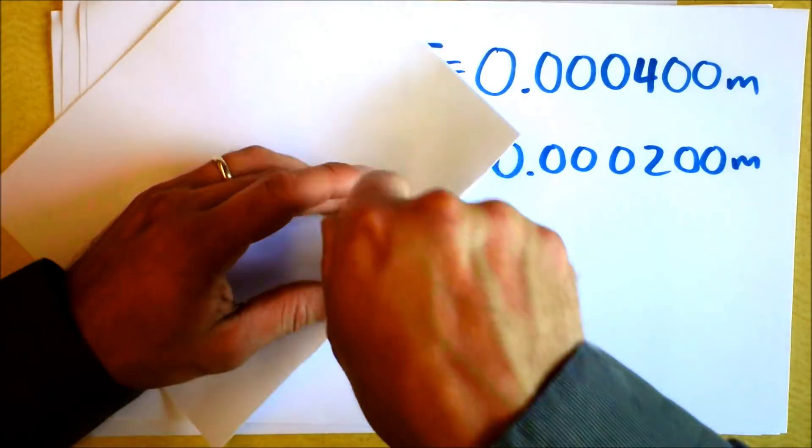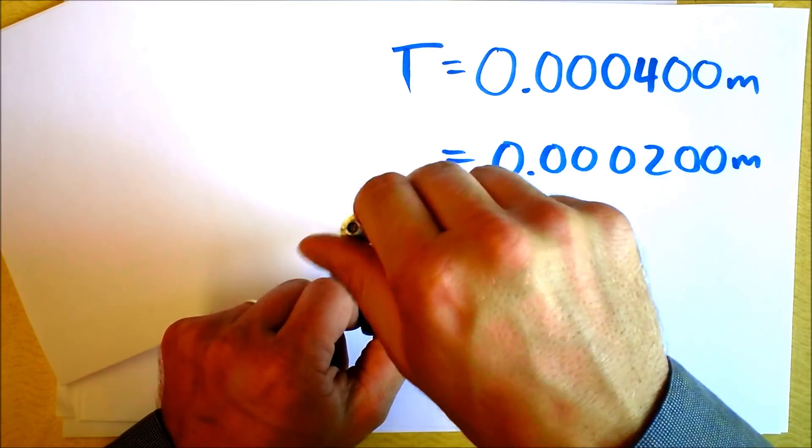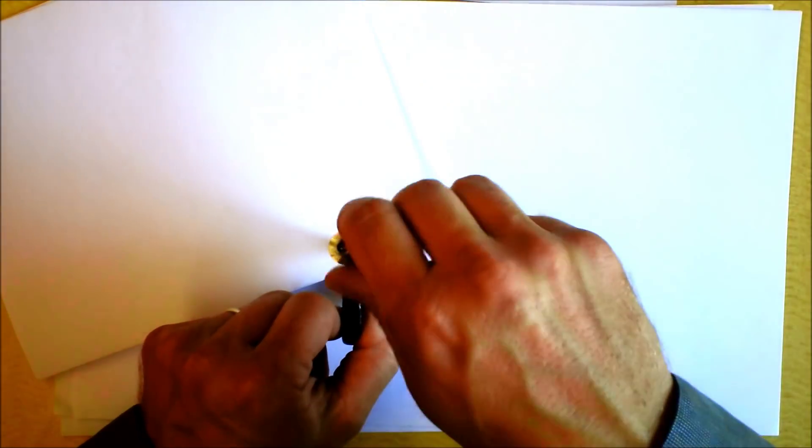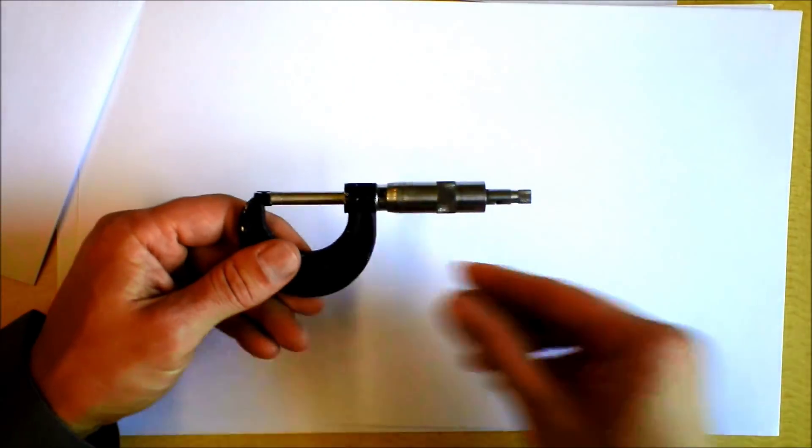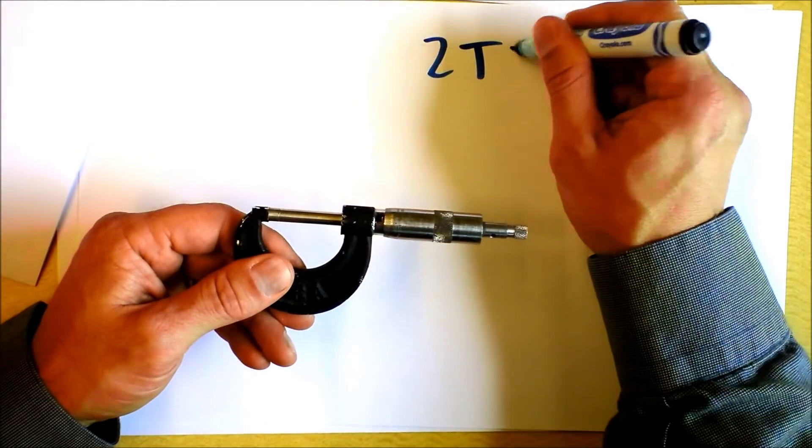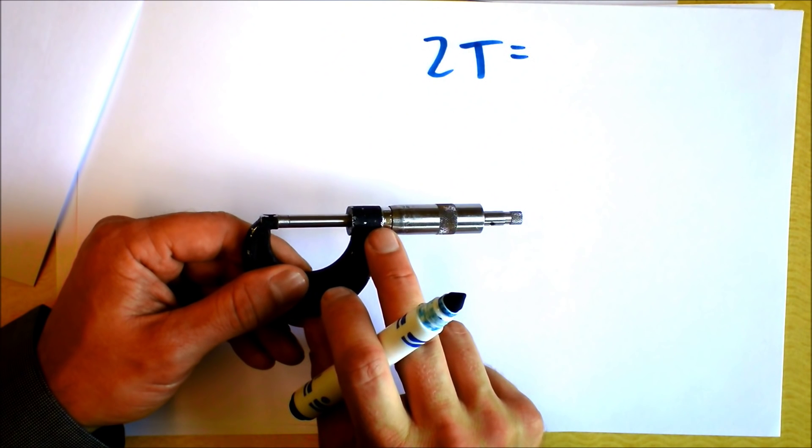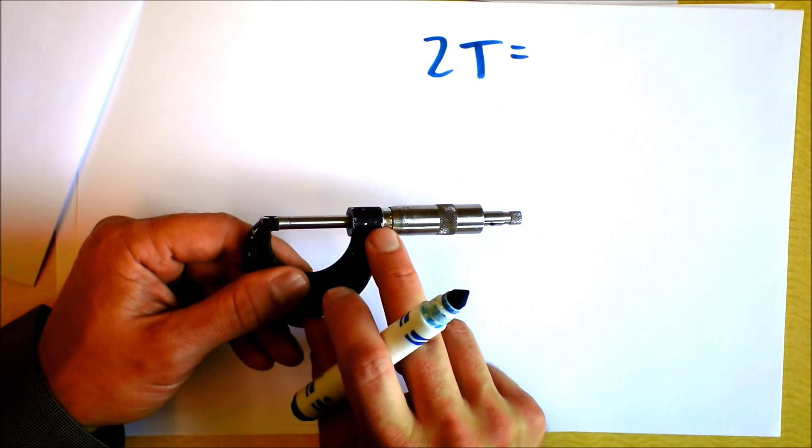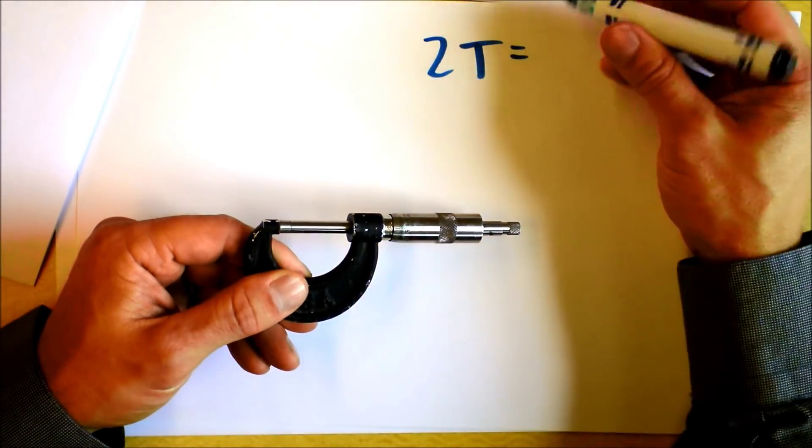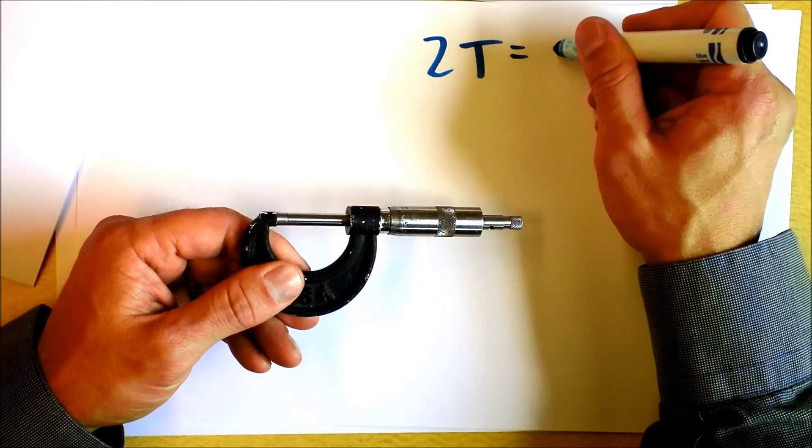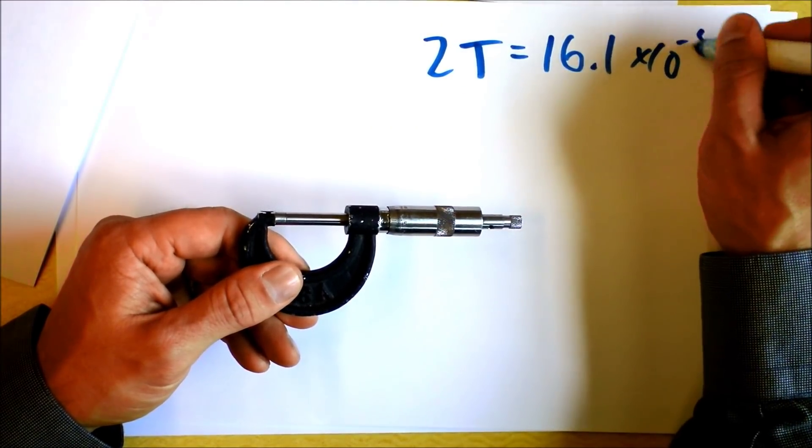Measuring the thickness of two pieces of paper and I find, wait for it, it says two times the thickness is now that looks like, well, it's certainly less than a millimeter already. I don't have any of the big ticks exposed. It looks like 16.1 little ticks. So that is 16.1 times 10 to the negative fifth meters.